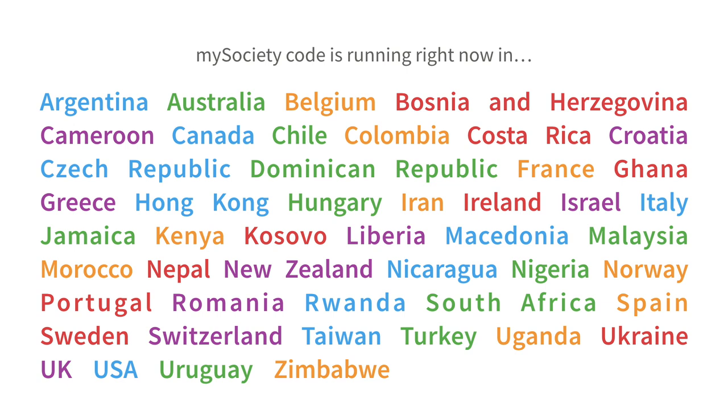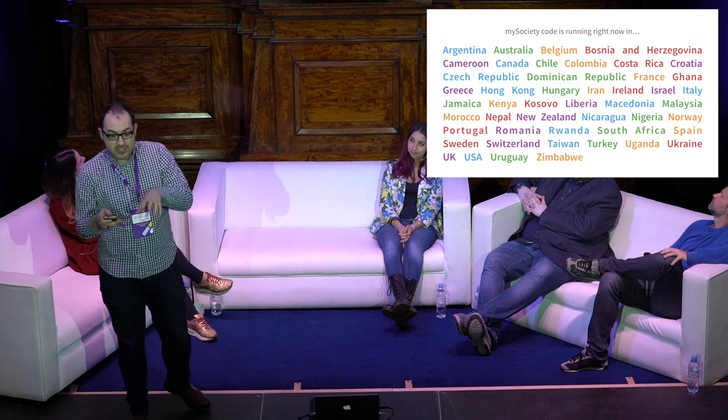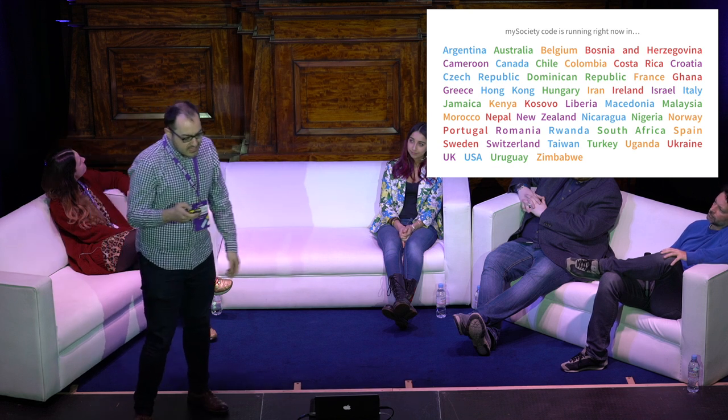We've got code running in all of those countries. Alaveteli, our Freedom of Information codebase, is used in about 28 countries. FixMyStreet for reporting issues to councils and bodies is used in about 18 countries. And we've got parliamentary monitoring sites running in countries like Zimbabwe, Iran, Kenya, Nigeria — loads of them.